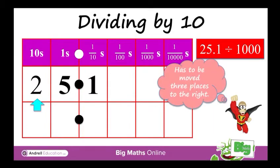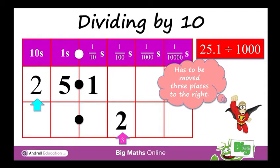We'll start with the 2. At the moment it's 2 in the 10s column, which means it's 20. We're going to move that three places to the right to make it 1000 times smaller. So one place would put it into the 1s, two places would put it into the 10ths, and three places would put it into the 100ths. So we put it into the 100ths.